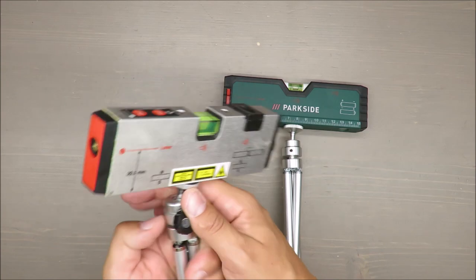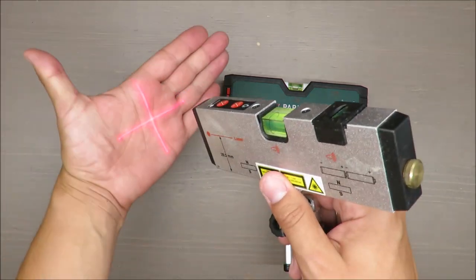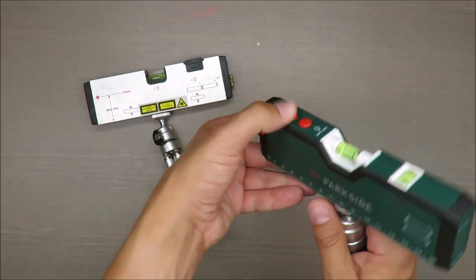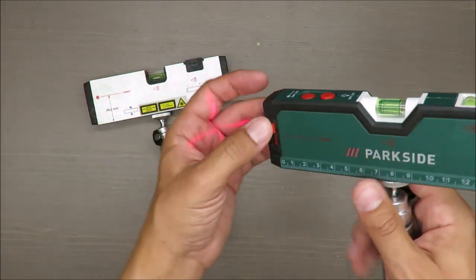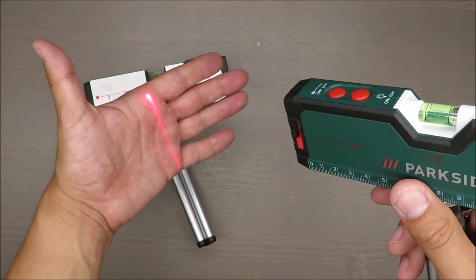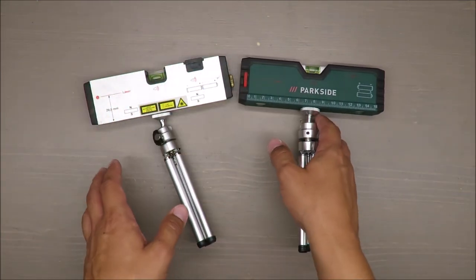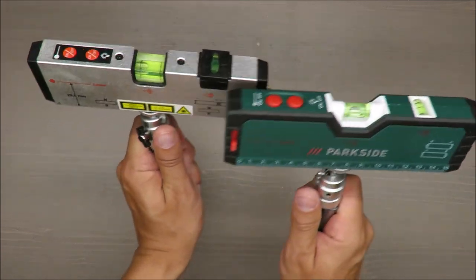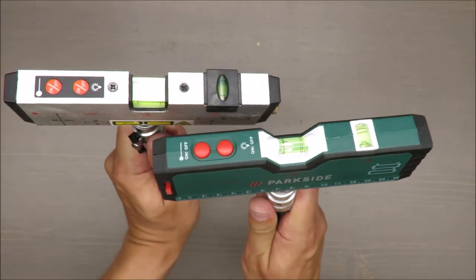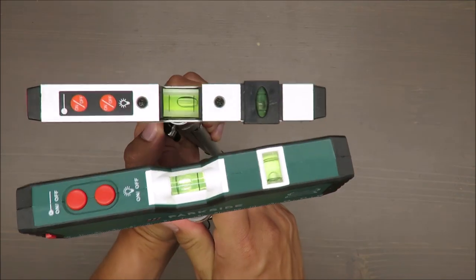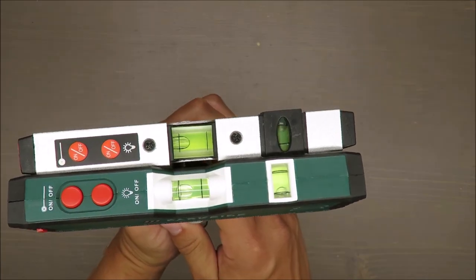Here you have only a cross-section, and here you can choose from cross-section to a single straight line. That's it. Other features like this bubble for leveling are almost identical—in principle, it will do the same thing.